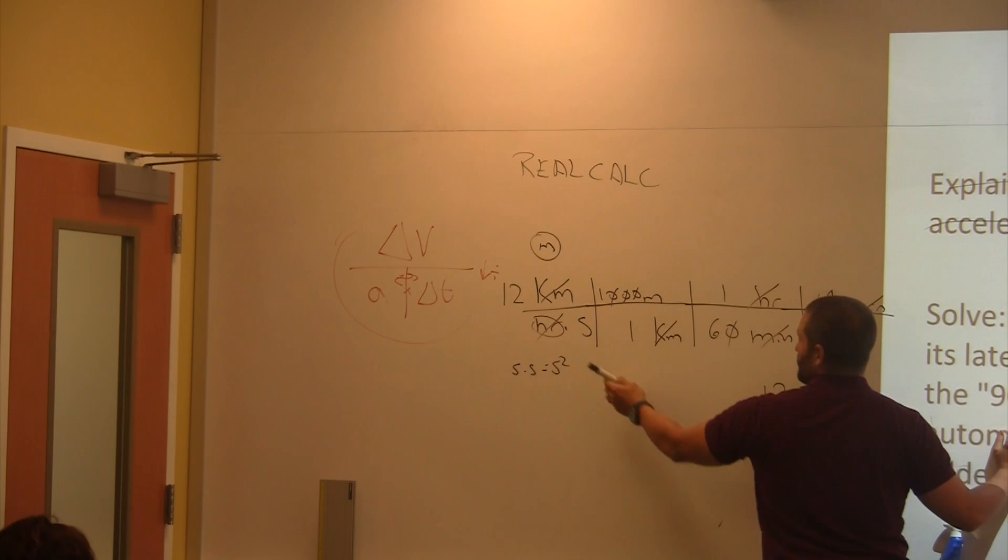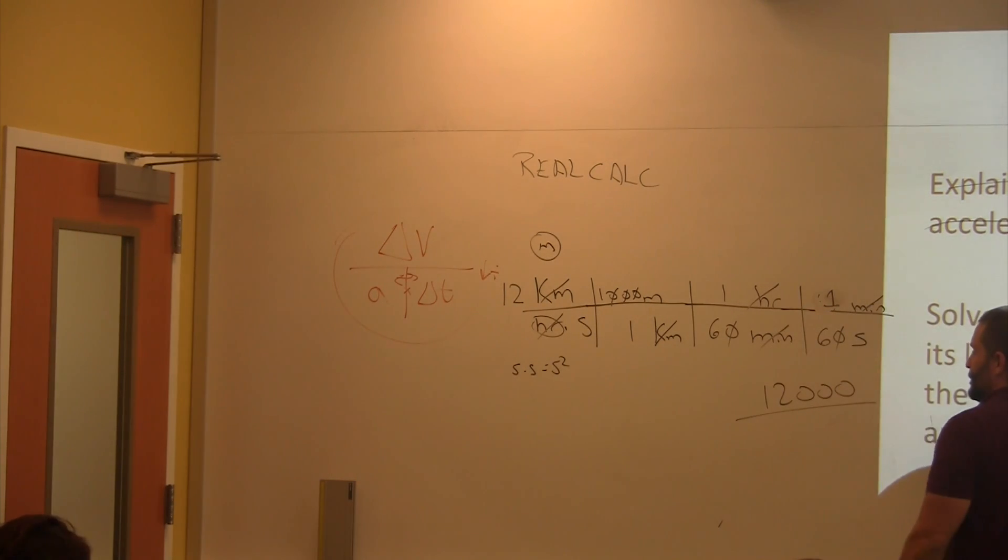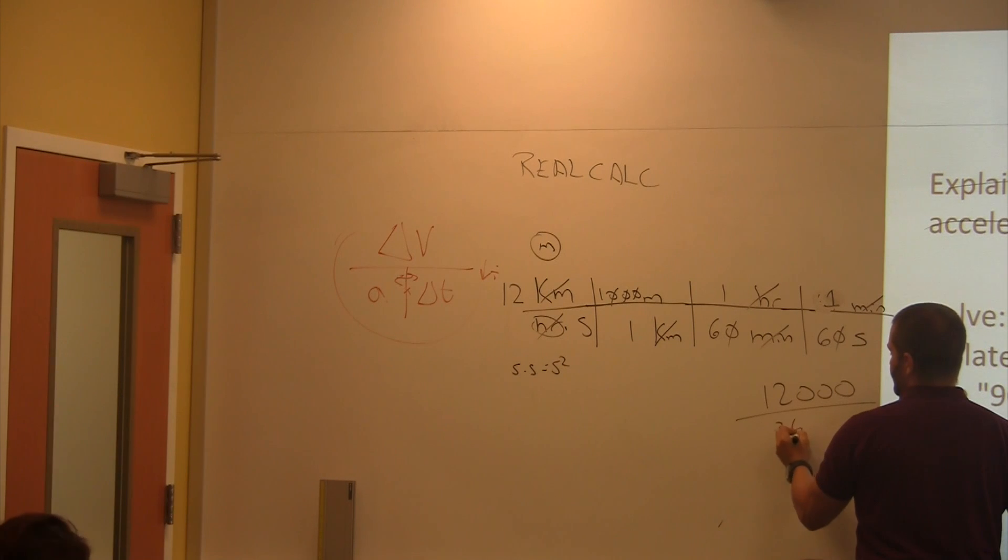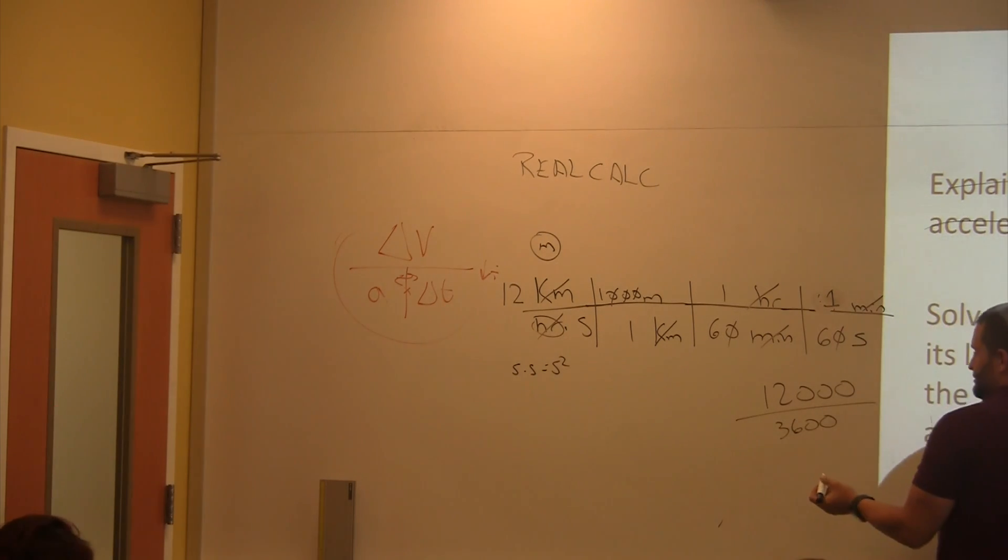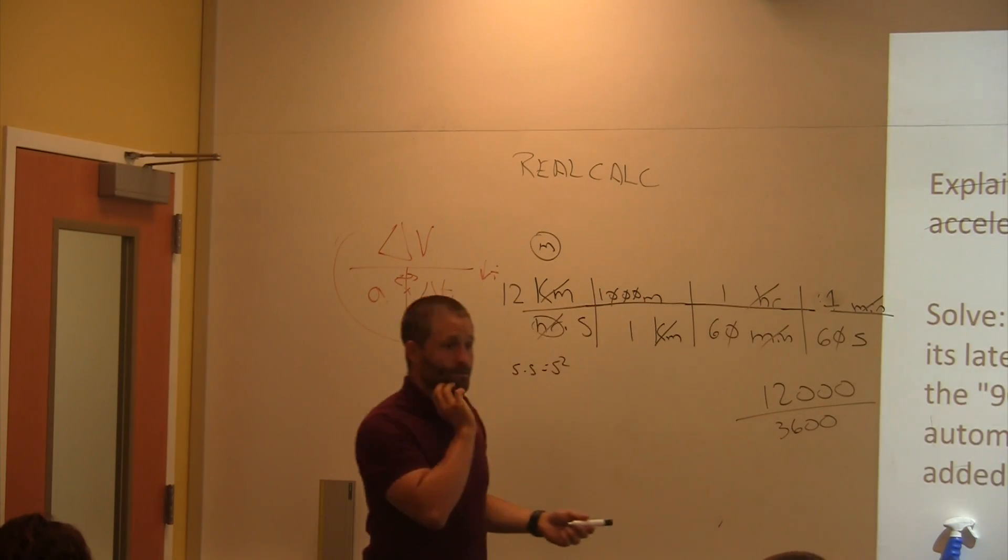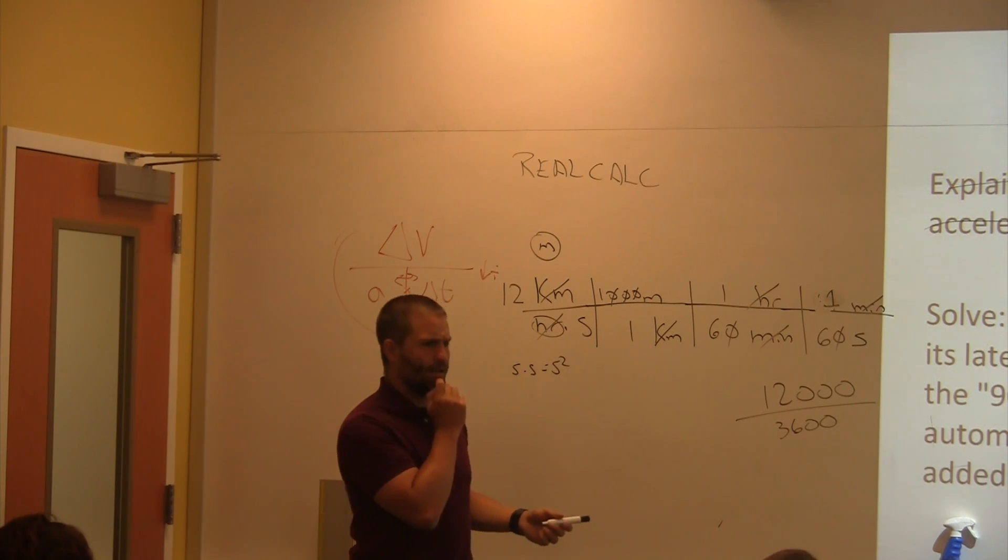Divided by this times this times this times this, which is 3,600. Right? Wait, repeat that part again. 3,600. Yeah. Because then you can't get, I can't see all the pieces. Is that 3,600? Yeah. I think so.